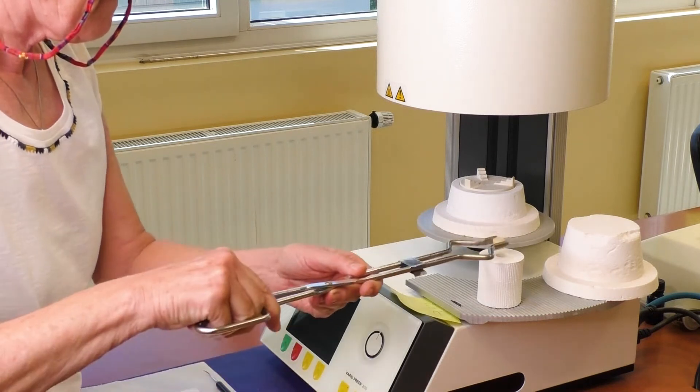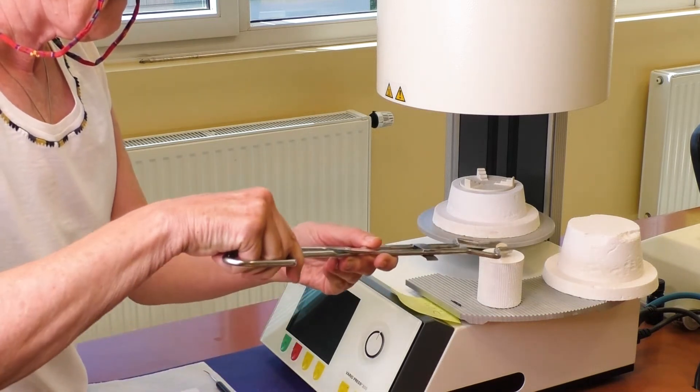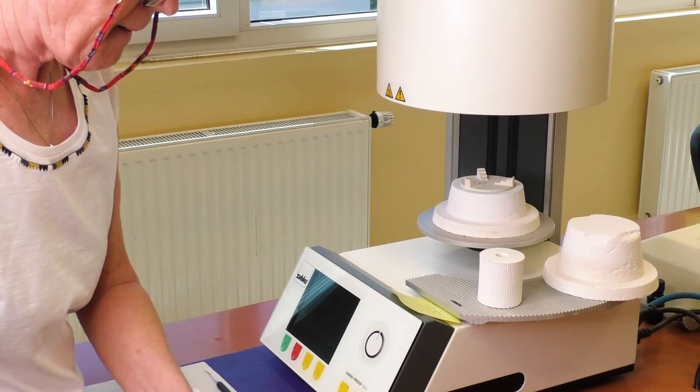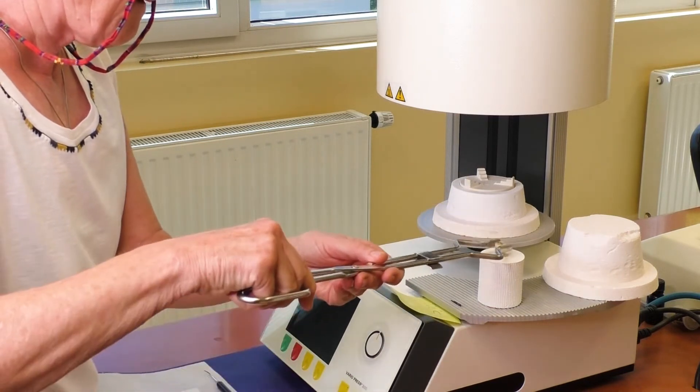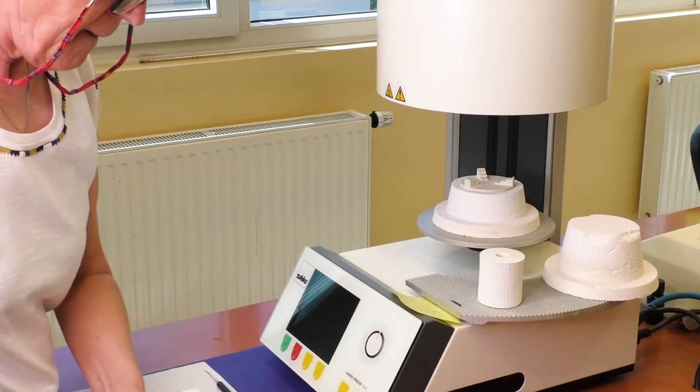When using two ingots, remove the logo print from the first one, which can be easily achieved by sandblasting. Otherwise, it can lead to discoloration.